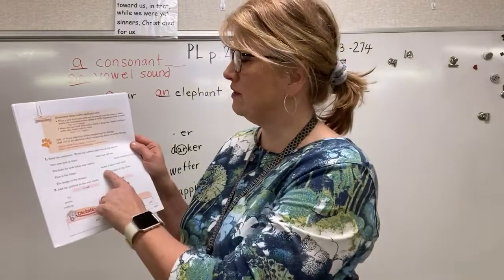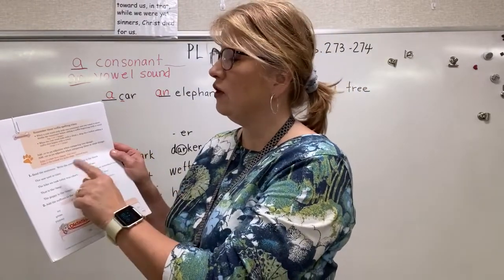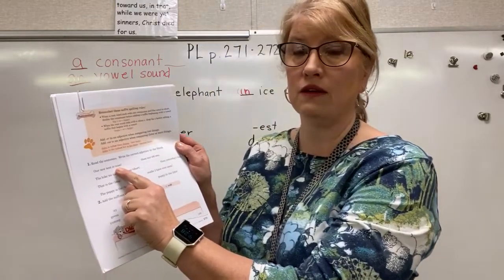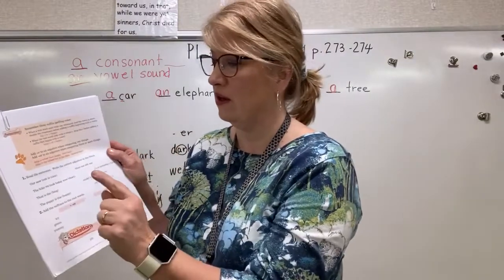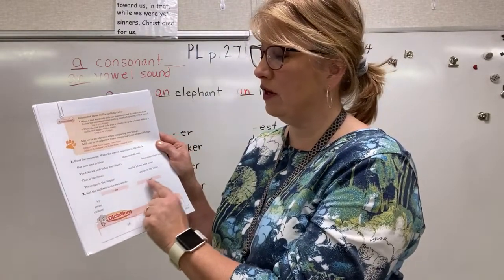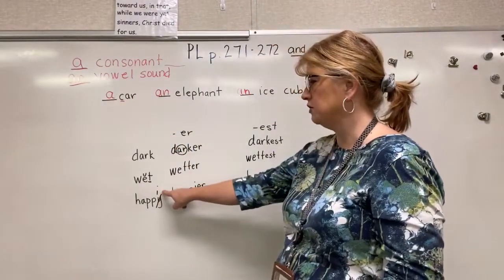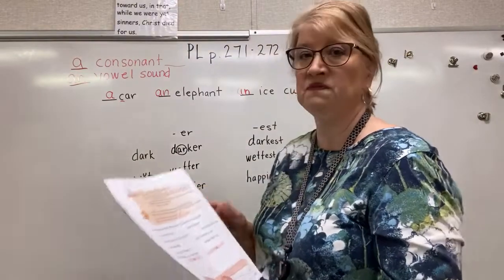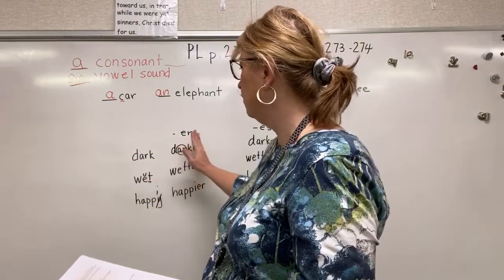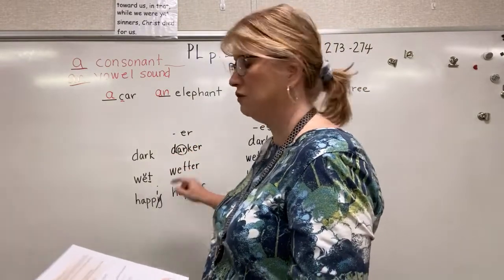You're going to read the sentences and write the correct adjective in the blank, using -er and -est with the words in parentheses. Down below, you'll be adding the suffixes -er and -est to listed words. Remember: if the word ends with Y, change it to I; if it has a special sound or no short vowel, leave it; if it has a short vowel, double the consonant.